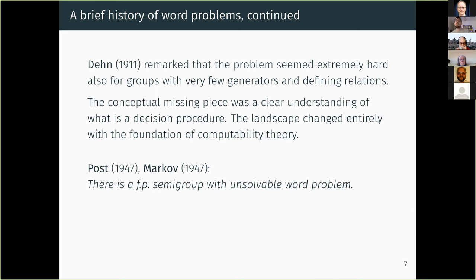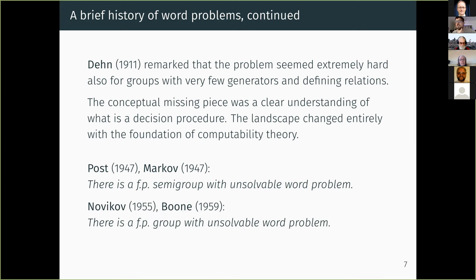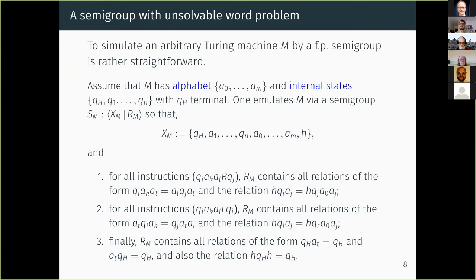An interesting historical remark: Church in 1938, just after the proof of the unsolvability of the halting problem, speculated that problems not obviously related to computation might also be unsolvable, and he actually considered the word problem for groups as a candidate. He was right. In 1947, independently Post and Markov were able to construct a finitely presented semigroup with an unsolvable word problem, but it took ten more years to prove you can do the same with groups — and in fact the proof is much harder.